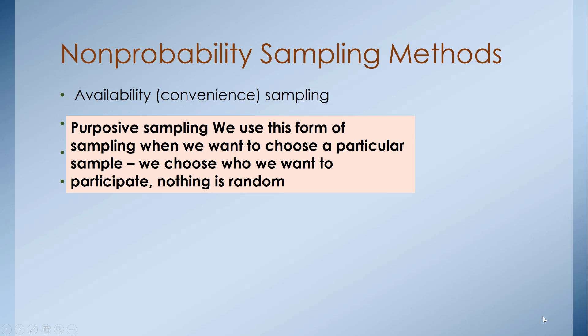Purposive sampling is when we choose a particular sample and decide who we want to participate — nothing is random. We're looking for individuals with specific characteristics. For example, we may be looking for individuals who are homeless and reside in Dallas County, and we select those individuals who meet those qualifiers. That's a purposive sampling design — non-probability, with no randomness to who we choose.